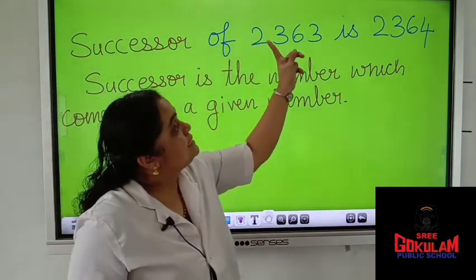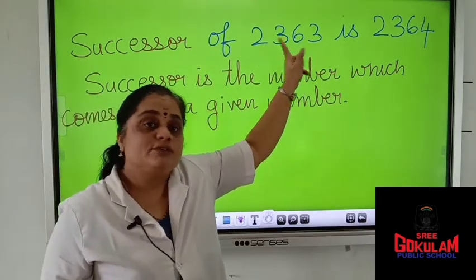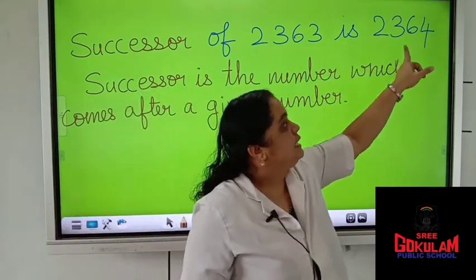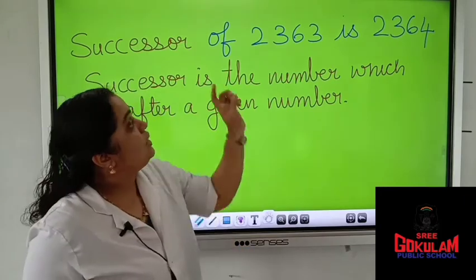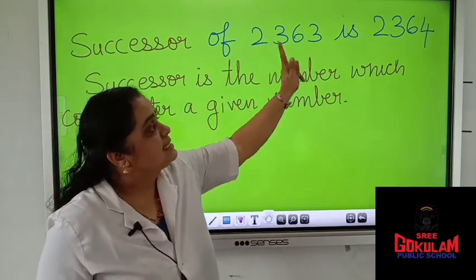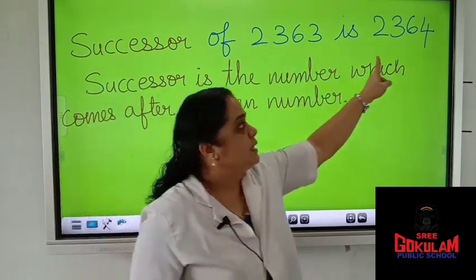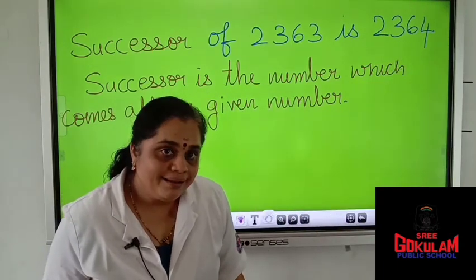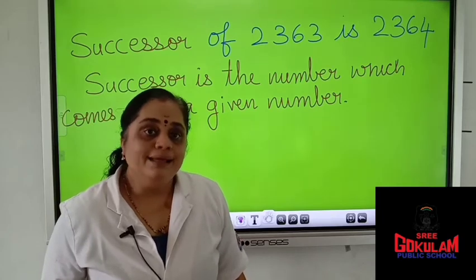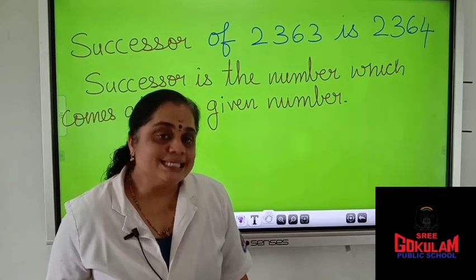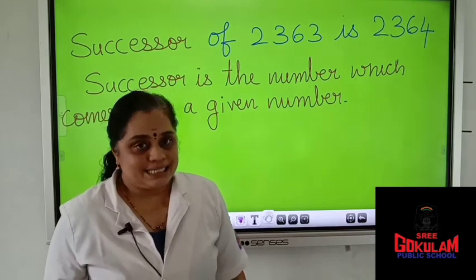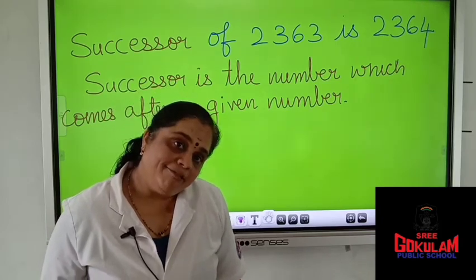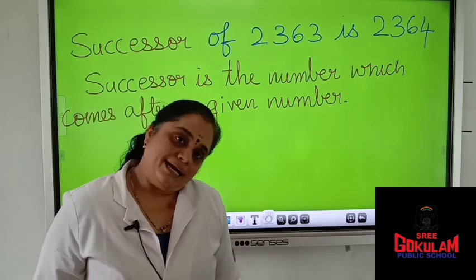Successor of 2,363 — after 2,363, which number will come? 2,364. So, successor of 2,363 is 2,364. What is the successor of 1,000? The successor of 1,000 is 1,001. What is the successor of 2,345? 2,346.